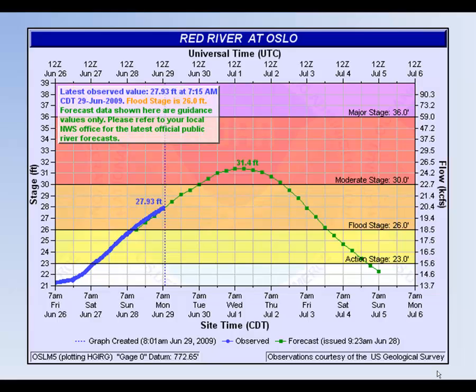River stage observations are shown by the blue line in the graph. The frequency of observations depends on the location. The blue value plotted near the observation curve, and also highlighted in the box in the upper left-hand corner of the graph, is the latest observation available. For this example, the latest observation is 27.93 feet and was taken at 7:15 a.m. on June 29, 2009. The latest observation may be delayed by up to one hour due to computer processing time.